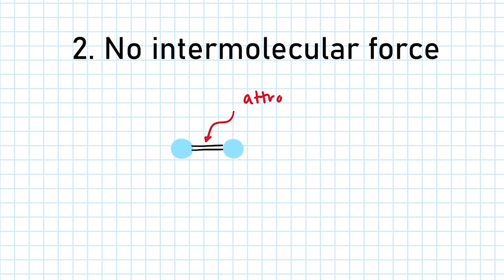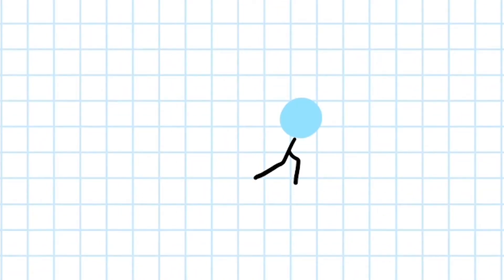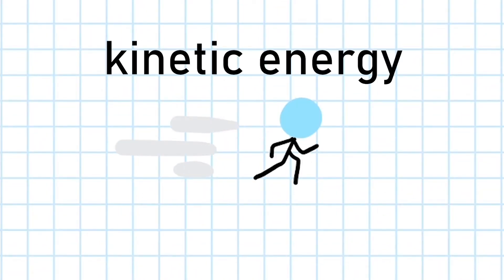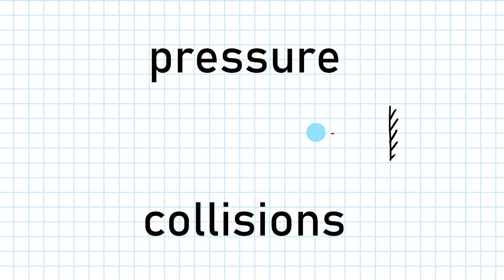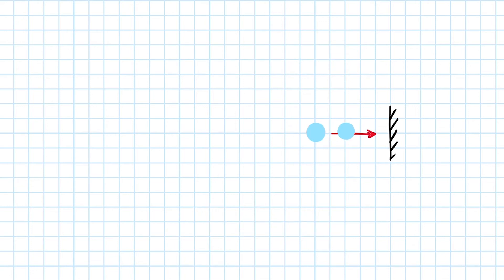The second assumption is that there are no intermolecular forces between molecules. The only form of internal energy each molecule has is kinetic energy. This is related to the next assumption: the pressure within the gas is due to collisions between particles and the container walls.